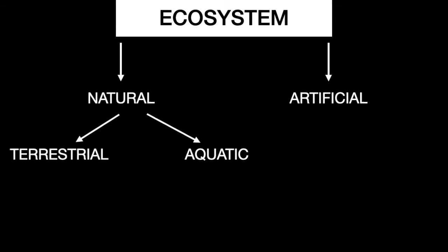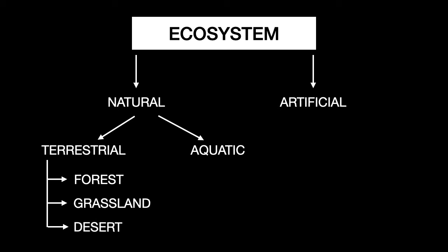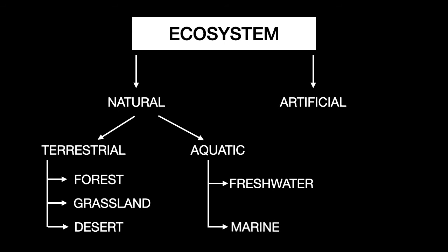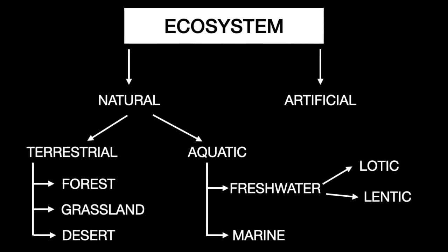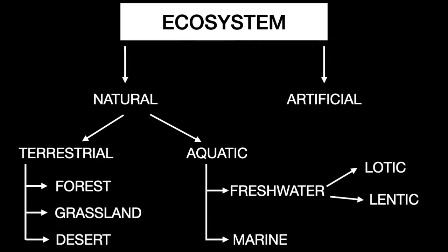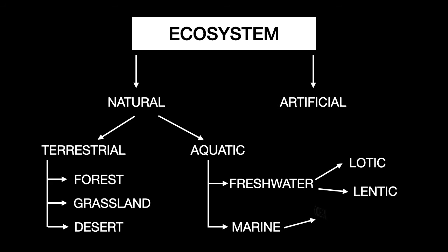The terrestrial ecosystem can be classified into three parts: forest, grassland, and desert. The aquatic ecosystem can be classified into two parts: freshwater and marine. The freshwater ecosystem can be further classified into lotic and lentic. Lotic ecosystems comprise running water, and lentic ecosystems comprise standing water, that is, still water.